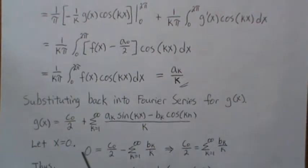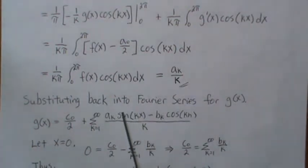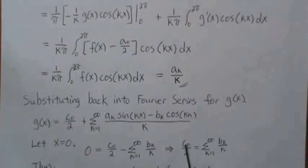But now let's solve for C₀ over two. So let's let x equals zero. So we know that's zero. And these are all zero. And this is one. So we're left with minus the infinite sum from Bₖ over k. So when we back solve for C₀ over two, we get this sum here.